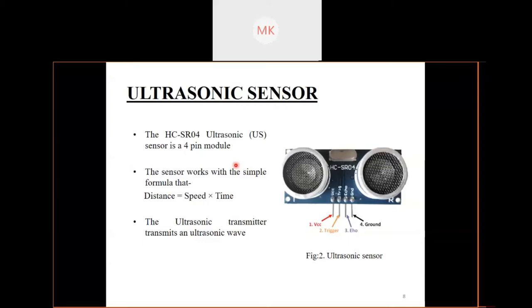The circuit built on the module calculates the time taken for the ultrasonic wave to come back and turns the echo pin high for that same amount of time. The ultrasonic sensor has four pins: VCC, which powers the sensor typically with 5 volts; the trigger pin; the echo pin; and ground.